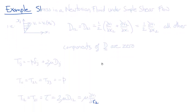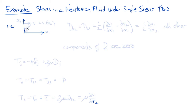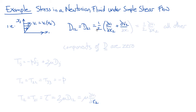Now let's look at an example of stress in an incompressible Newtonian viscous fluid under simple shear flow. A simple shear flow has velocity in the x1 direction varying as a function of x2: v1 equals v1(x2), independent of x1 and x3, while v2 and v3 are zero. The only non-zero components of the rate of deformation tensor are D_12 and D_21, which equal one-half times del v1 / del x2, with all other components being zero.